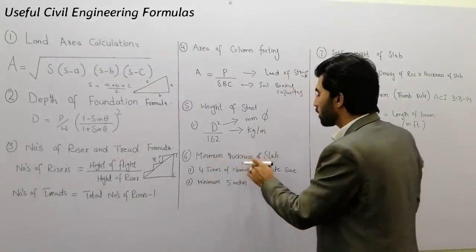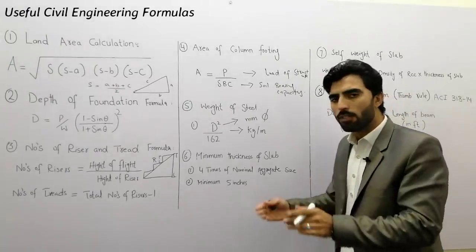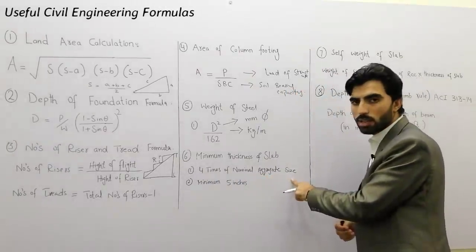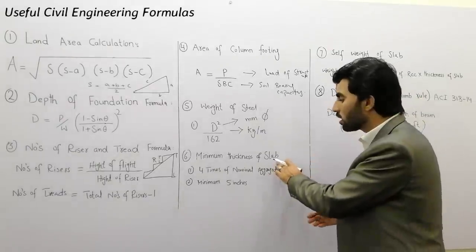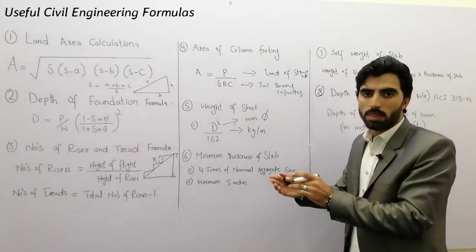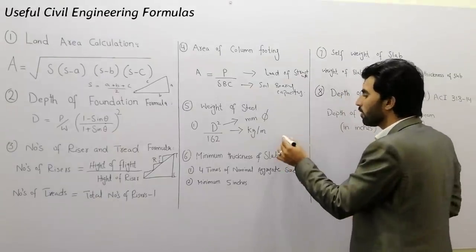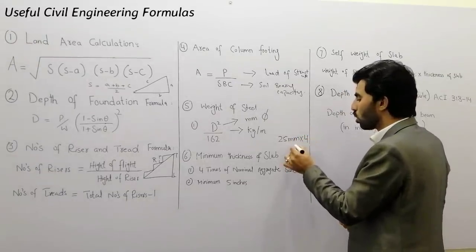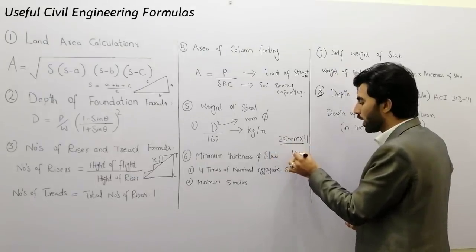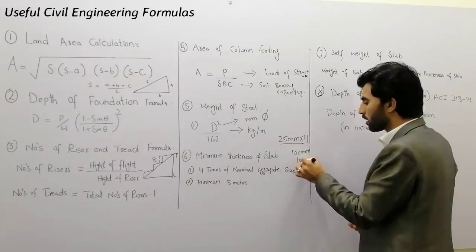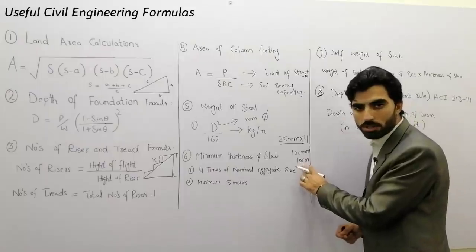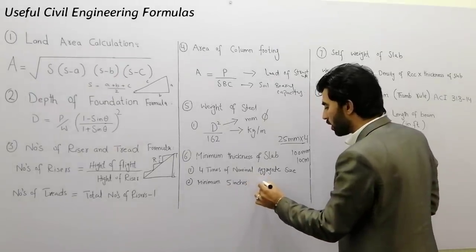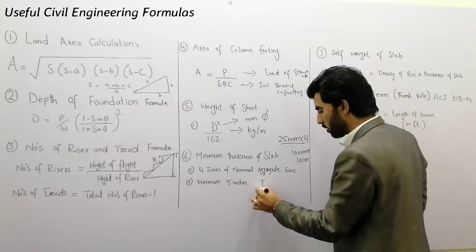The sixth formula is the minimum thickness of an RCC slab. The formula is four times the nominal aggregate size. For example, if we use 25 millimeter aggregate in an RCC slab, we multiply by four, so the minimum thickness of the RCC slab should be 100 millimeters, or 10 centimeters, or 5 inches. This is as per IS code.